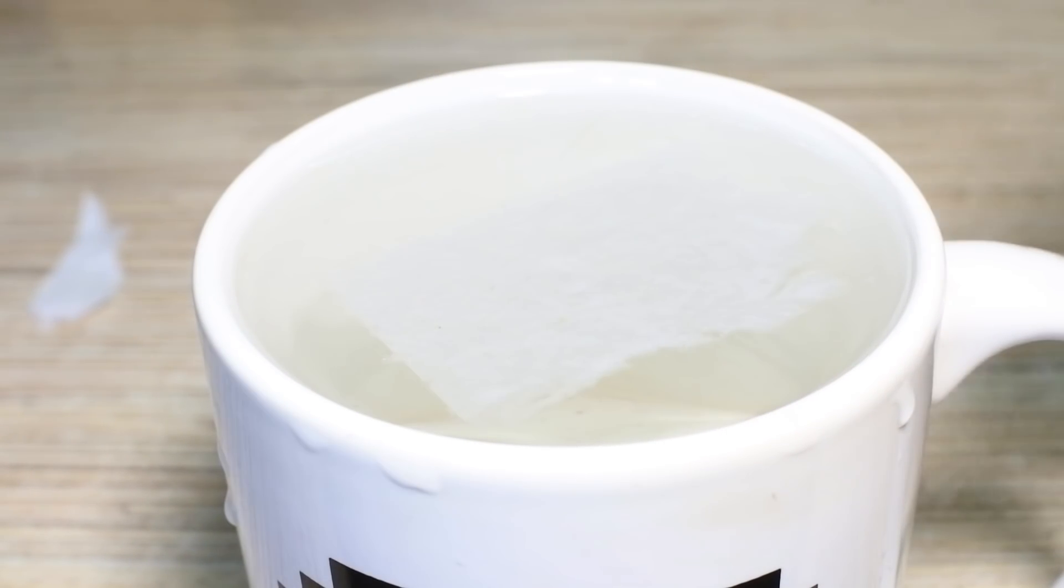There is another way to put a needle on water. Place a piece of toilet paper on water's surface, and then the needle. Then carefully make paper drown, and needle will float on the water's surface.